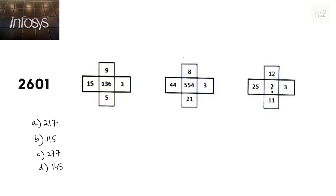Hopefully you must have got the answer by now. In these kinds of puzzles, it is always given that there is some relationship between the four outer numbers and the inner one. The same relationship exists with the other set of four outer numbers and their inner one, and based on that particular relation we need to identify the missing number in the third diagram.